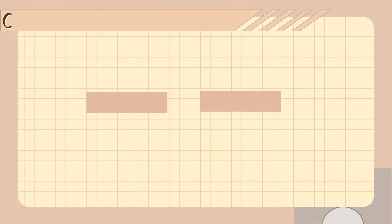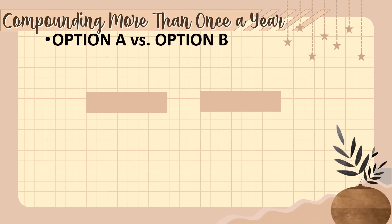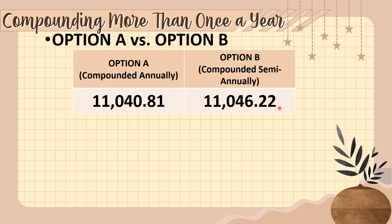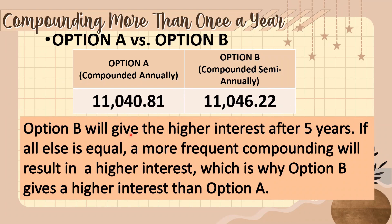Now let's compare the earnings of Option A versus Option B. Option A, compounded annually, gives 11,040.81. Option B, with the same principal of 10,000 pesos, same 2% interest rate, and same 5-year term but compounded semi-annually, gives 11,046.22. Therefore, Option B yields the higher interest after 5 years. If all else is equal, a more frequent compounding will result in a higher interest.